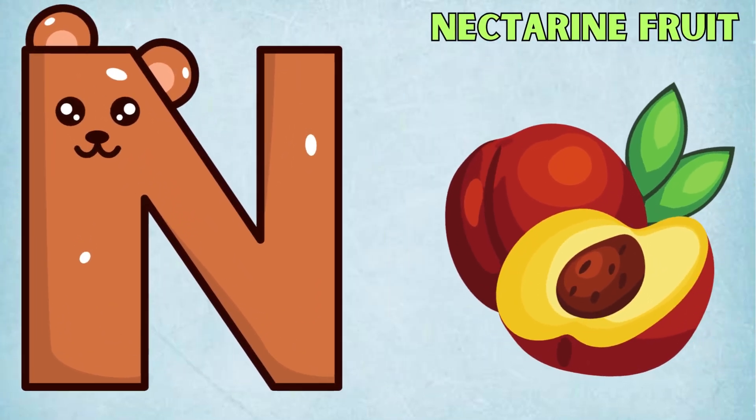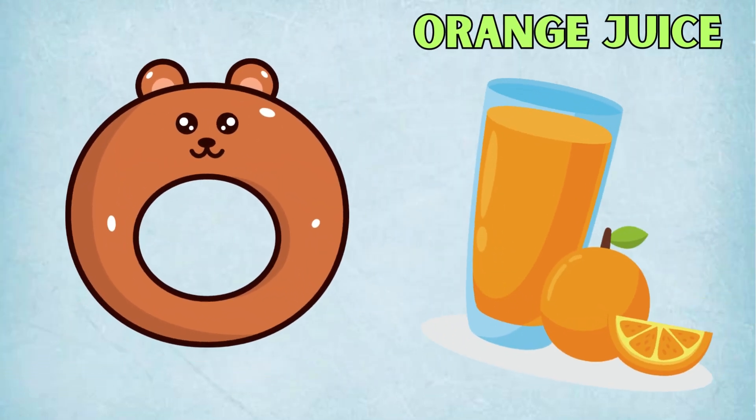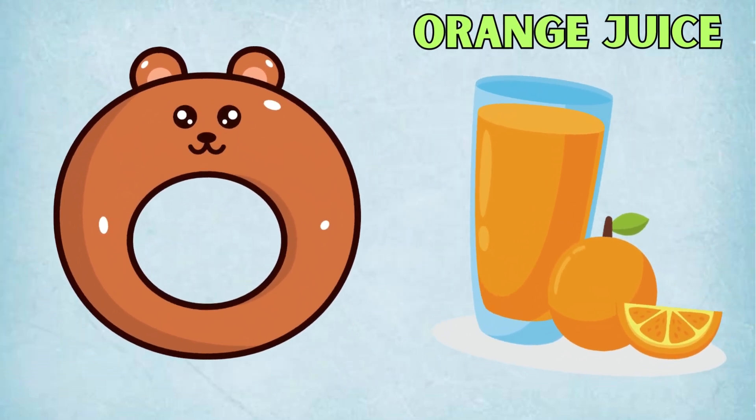N is for Nectarine Fruit, N, N, Nectarine Fruit. O is for Oranges, O, O, Oranges.